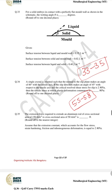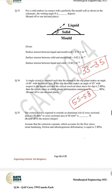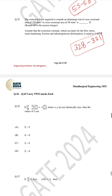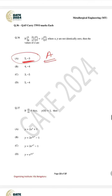For question number 35 the correct answer is in the range 328 to 331. For question number 36 the correct answer is A, which is 5 and −3. For question number 37 the correct answer is D, which is y = e^(2x²).